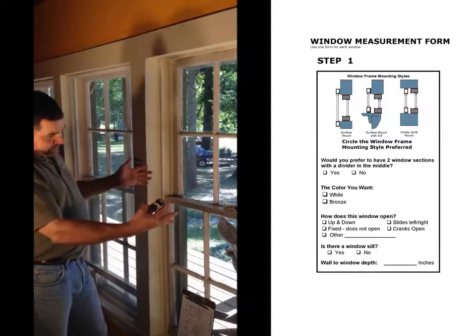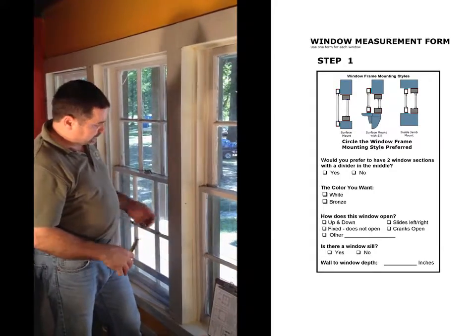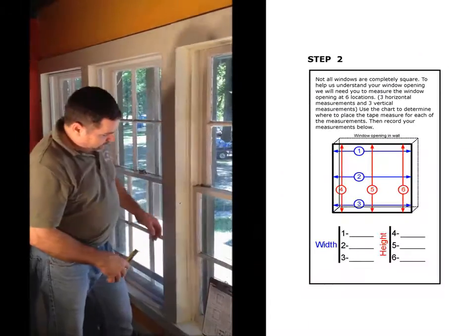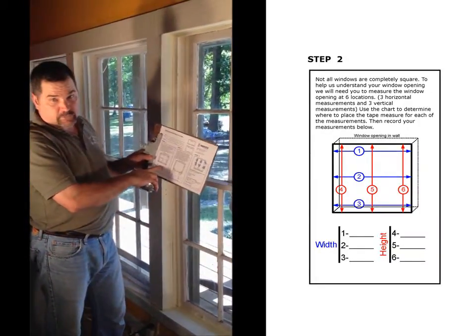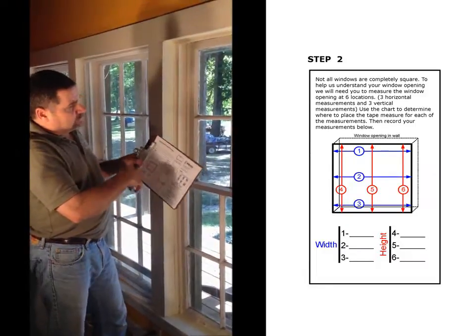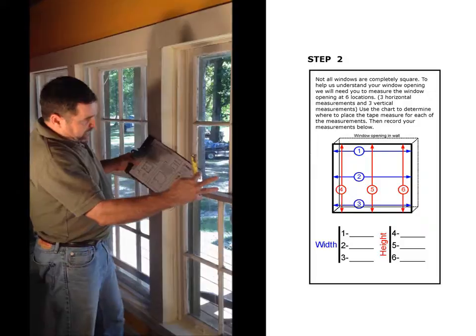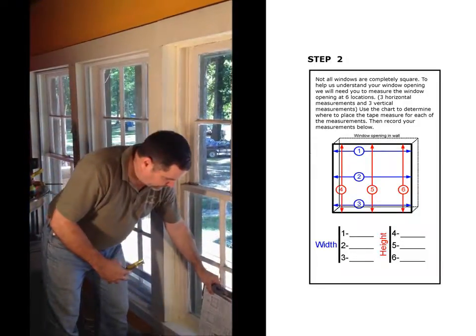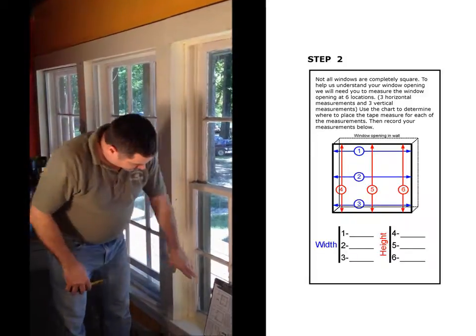For this video, we're going to do the in-jam measuring system. Also on your order form, we want you to measure the window in six different places. We do that because when we make the panel, we want to make sure that it fits in the opening as best as possible without you having to do any additional cutting once you get the material.